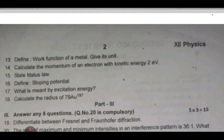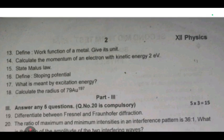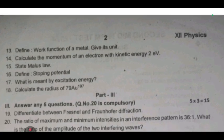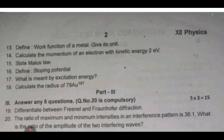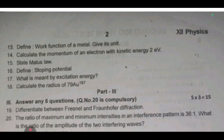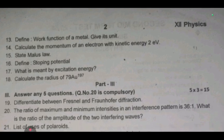Mention the difference between interference and diffraction. Define work function of a metal, give its unit. Calculate the momentum of an electron with kinetic energy 2 eV. State Malus law. Define stopping potential. What is meant by excitation energy? Calculate the radius of 79 AU 197.